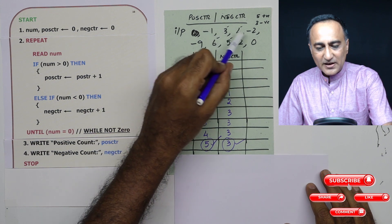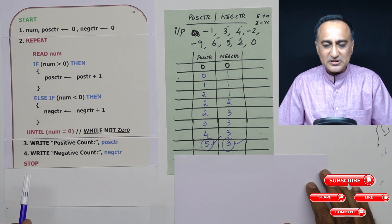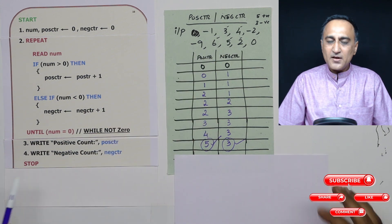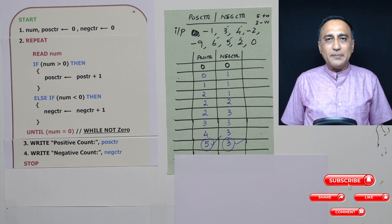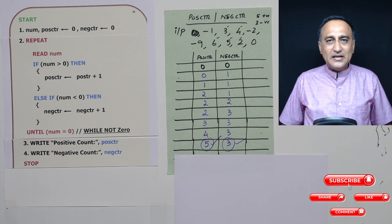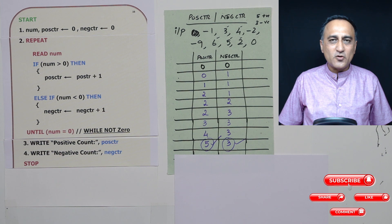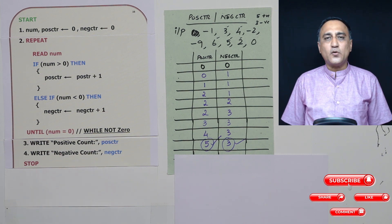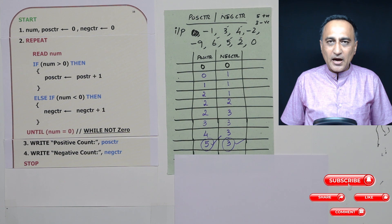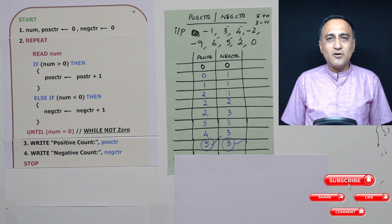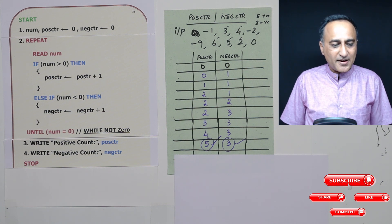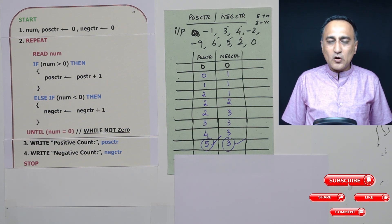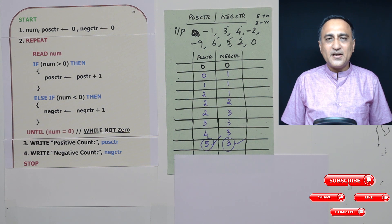This is the logic using the repeat-until loop: how I read positive and negative numbers in a sequence, and when zero is entered, I print the total count of positive and total count of negative numbers. I hope the logic of this particular algorithm is clear and you have got a very good example to understand how a repeat-until loop works in real life.